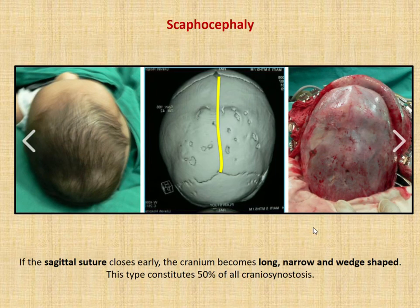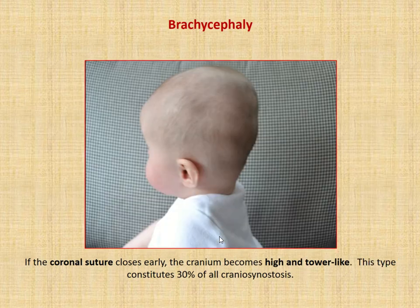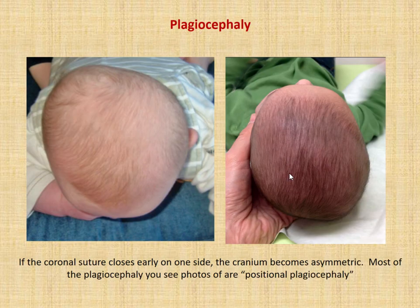Scaphocephaly is where the sagittal suture closes early, and the cranium becomes long and narrow. Brachycephaly is where the coronal suture closes early so that the cranium ends up being high and tower-like, and that happens relatively often. Plagiocephaly is where the coronal suture only closes on one side, so the cranium becomes asymmetric.